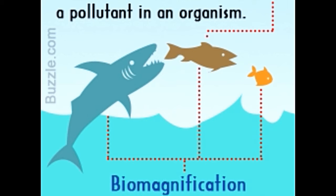Bioaccumulation refers to the increase in concentration of a pollutant in an organism. It usually occurs when an organism ingests a particular substance at a faster rate than it can metabolize or excrete. While most organisms are contaminated as a result of consuming contaminated food, others — aquatic species in particular — absorb contaminants directly from the water, in what is known as bioconcentration. An apt example of bioaccumulation is phytoplankton and other microscopic organisms absorbing pollutants like DDT, lead, and mercury, and storing them in their tissues.